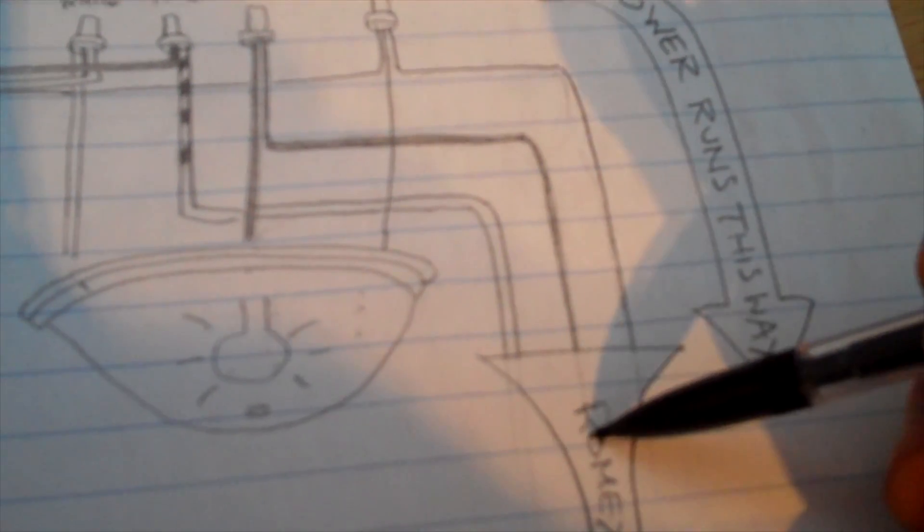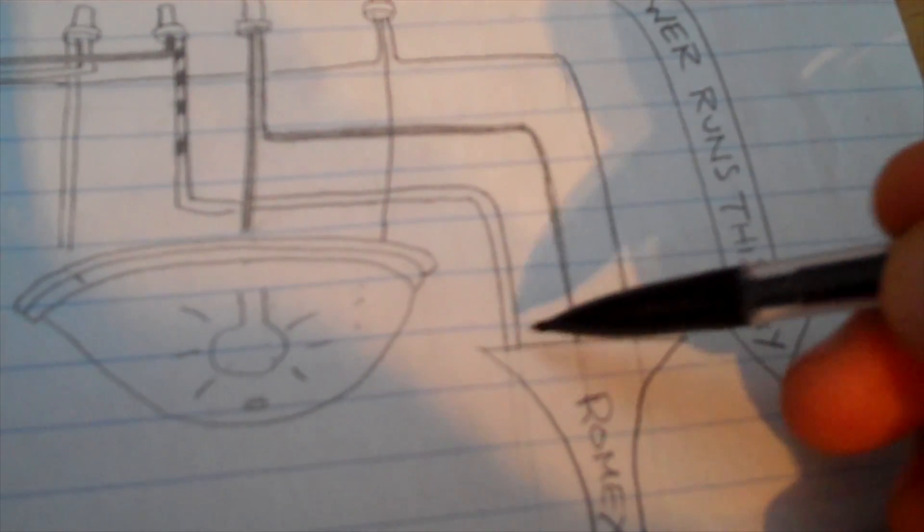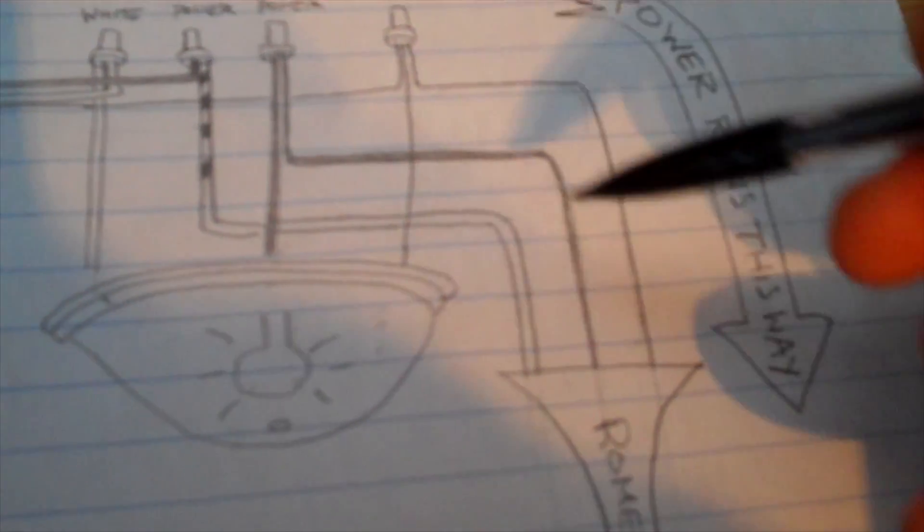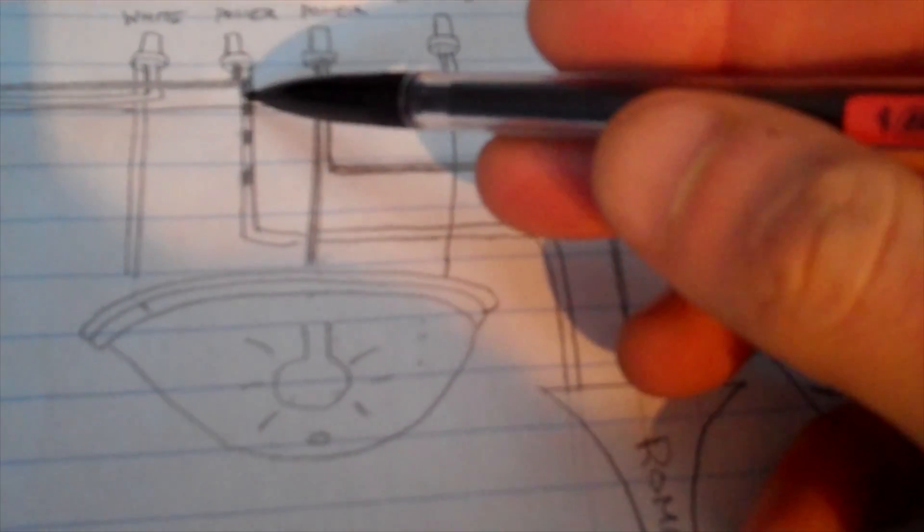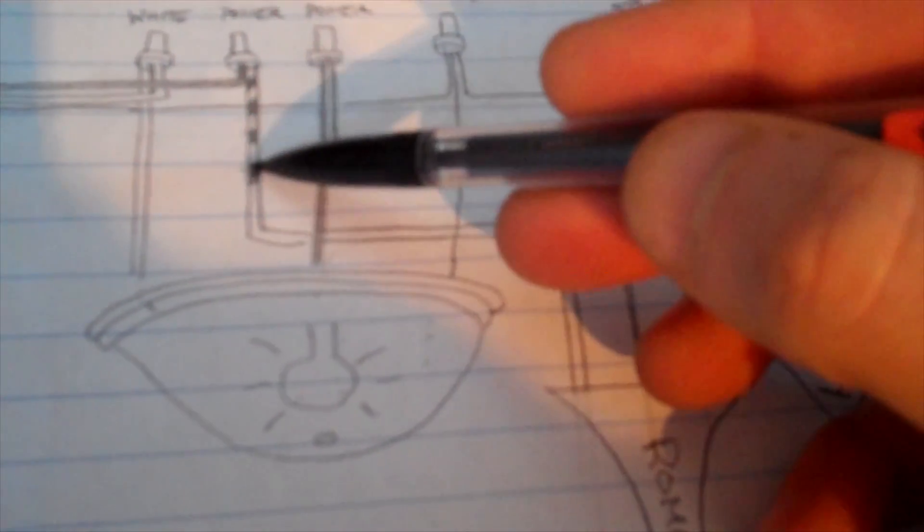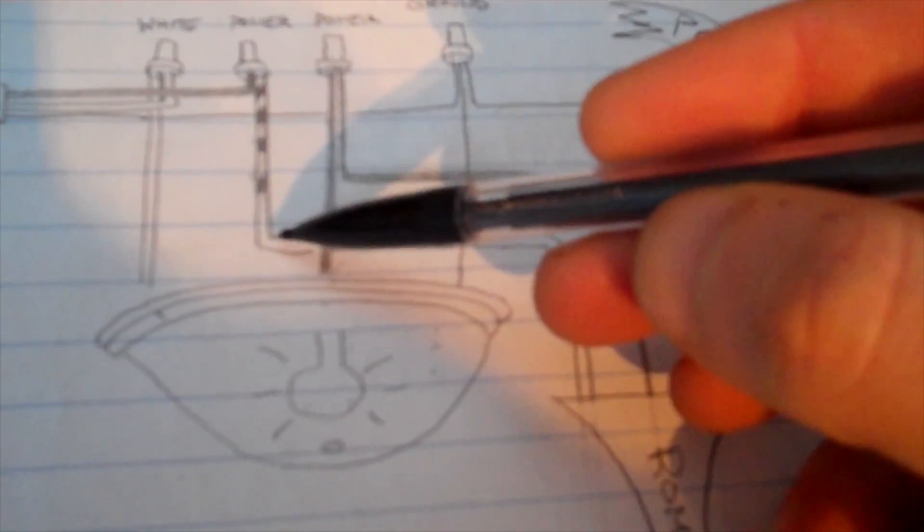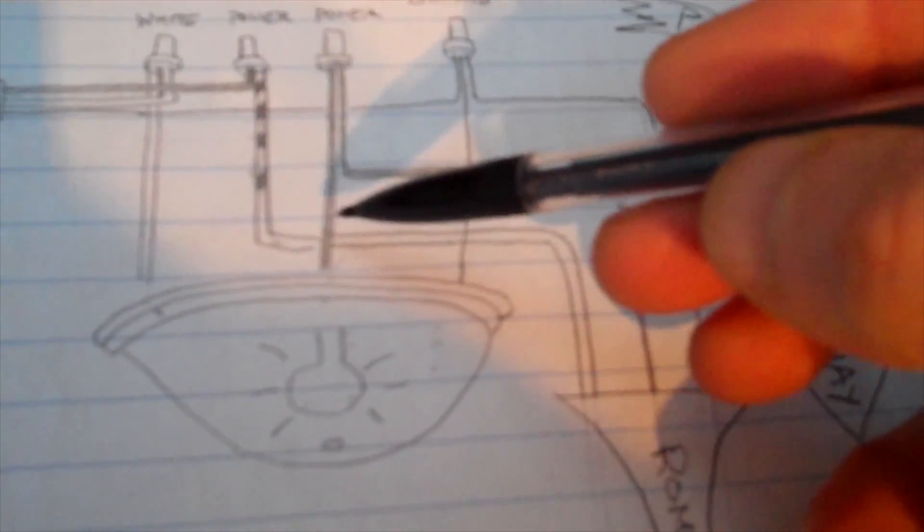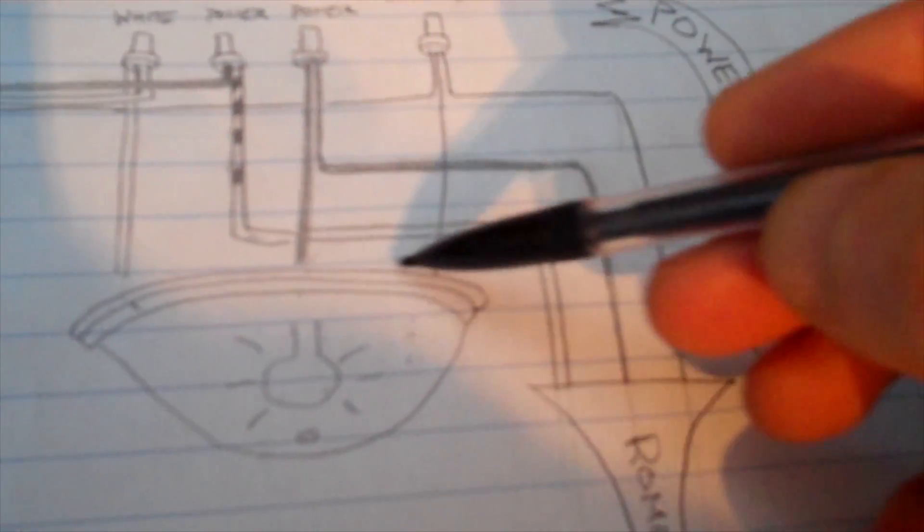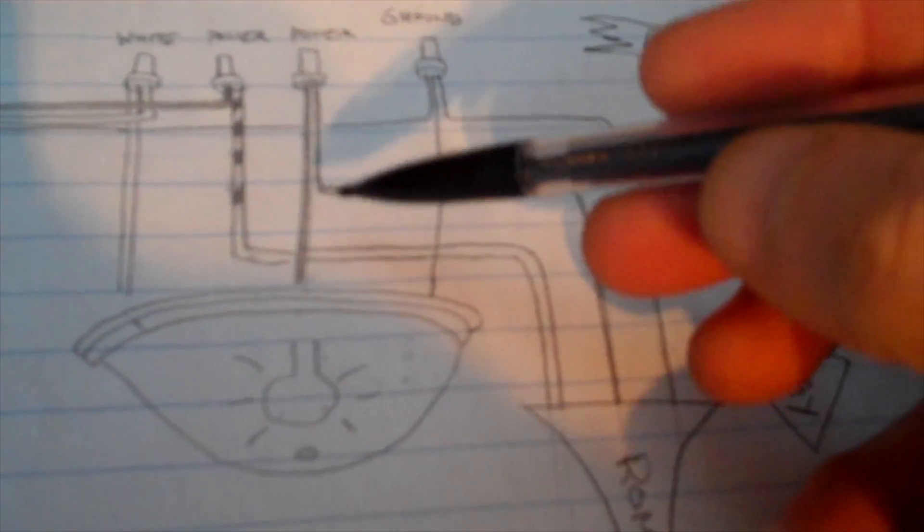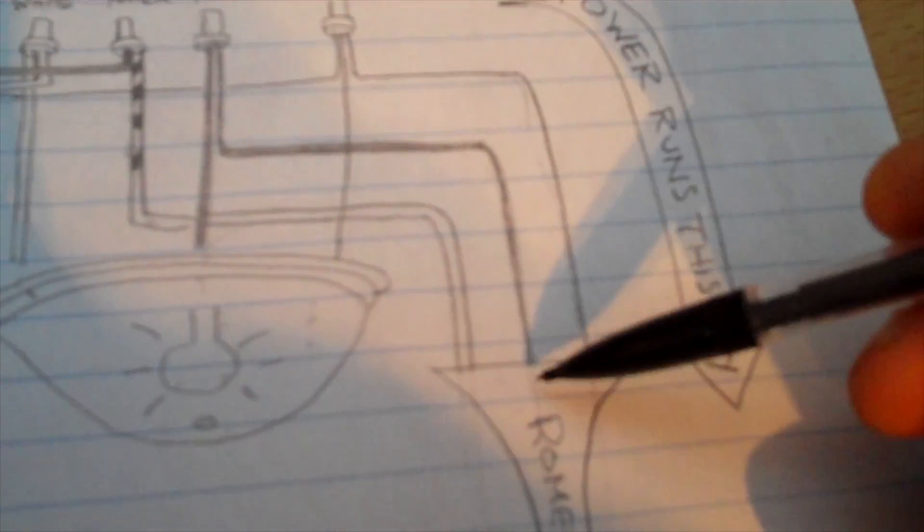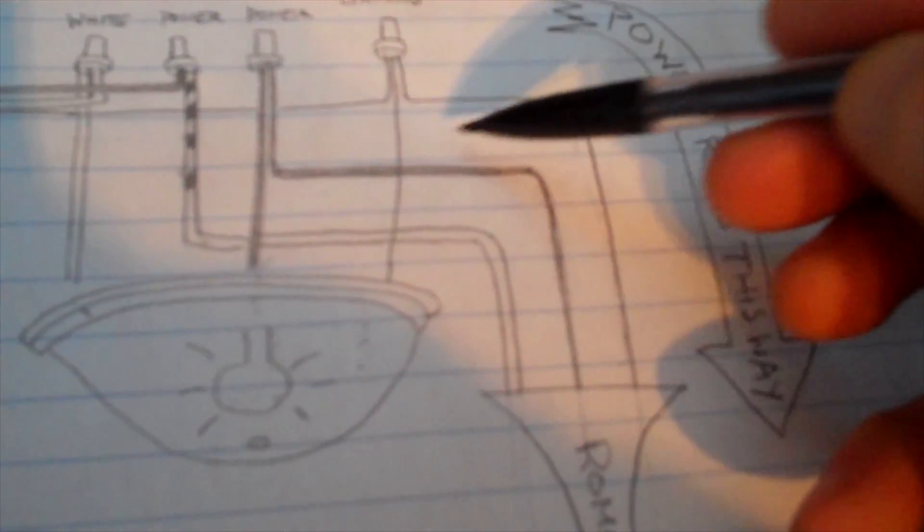So you have a new piece of Romex. It's got a white, it's got a black, it's got a ground. The white is tied together with a piece of black tape to tell a future electrician or yourself that something's funny with this switch or with this light. It's going to go to the Romex. The black is going to go from the light to the new piece on the Romex. The ground has been tied and that's going to continue on down the line.